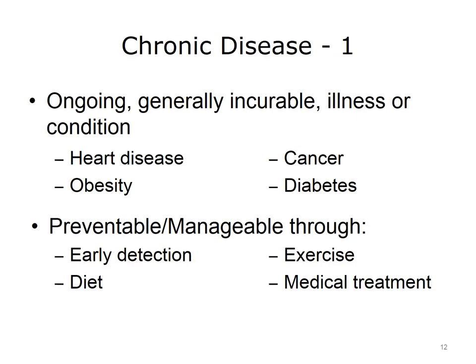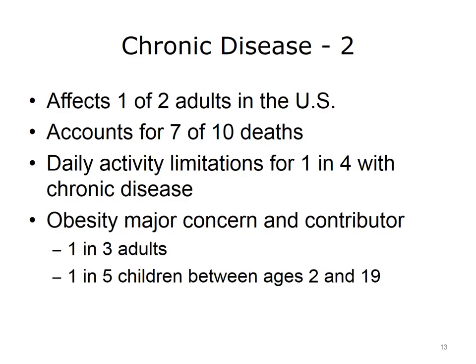Care and treatment of individuals with chronic disease constitutes a large portion of healthcare expenditures in the U.S. Chronic diseases are ongoing, generally incurable illnesses or conditions such as heart disease, obesity, cancer, and diabetes. These diseases are often preventable and frequently manageable through early detection, improved diet, exercise, and medical treatment. The CDC estimates that as of 2012, approximately one out of two adults had at least one chronic disease, and seven out of the top ten causes of death were due to chronic disease.